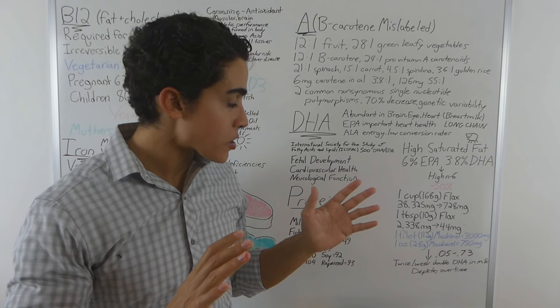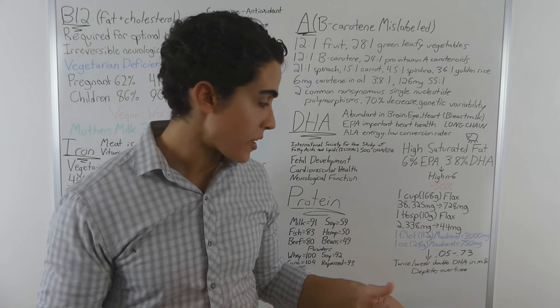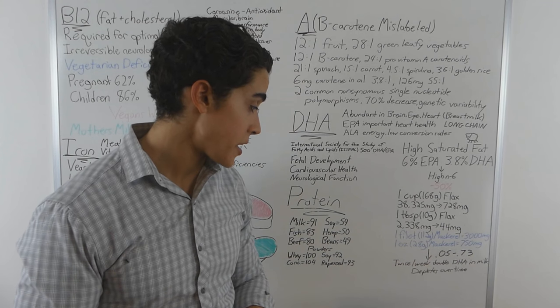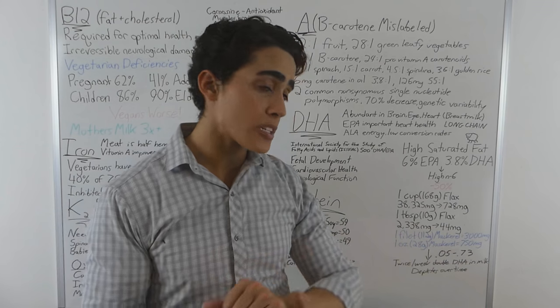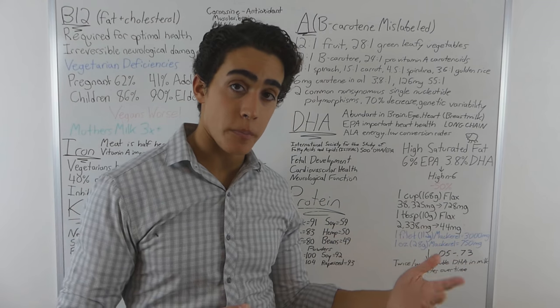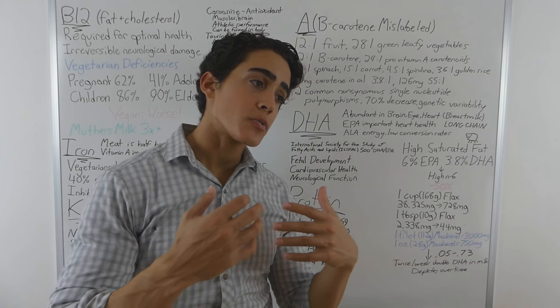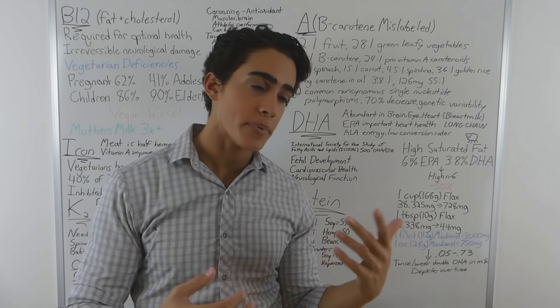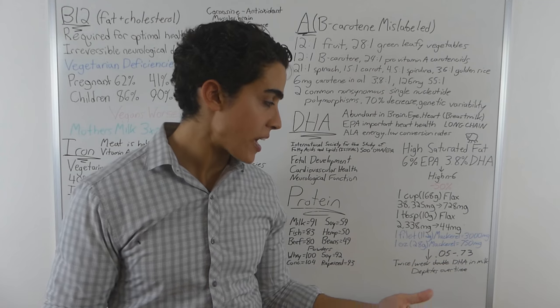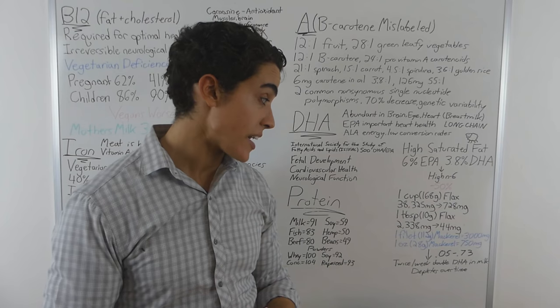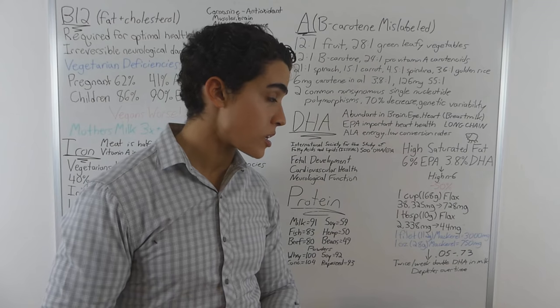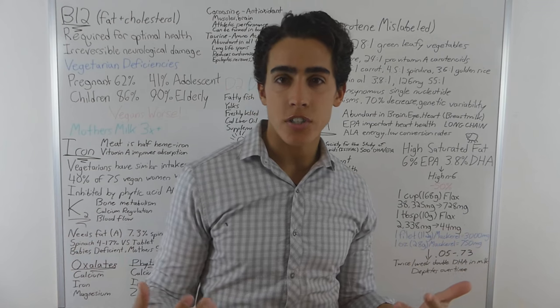Vegans aren't even close to hitting the RDA with these, let alone optimal health. Levels in breast milk of DHA can vary from 0.05 to 0.75% and consuming fish twice a week doubled the DHA in breast milk of women. So it's safe to say there's a minimum amount of DHA that needs to be in breast milk for the mother to be nourishing the child in an optimal amount. I'm assuming that's somewhere between 0.3 and 0.4% DHA, although the more the better, I guess. You want your mother eating fish or you want your mother eating legumes. Come on, what's going to nourish the child?